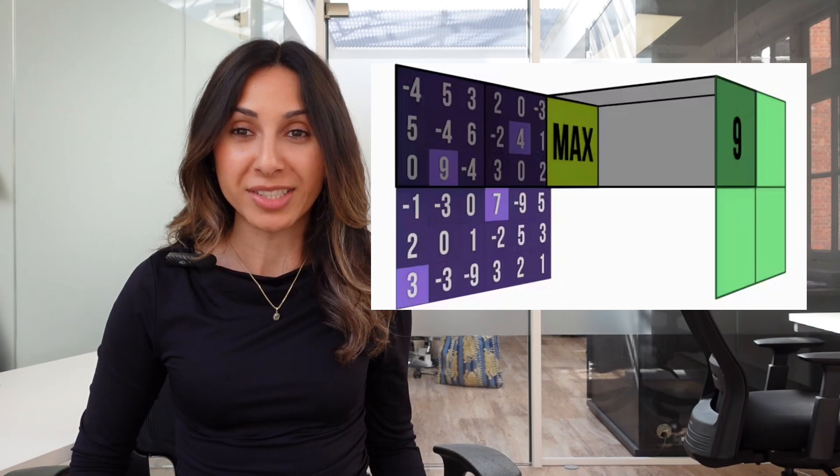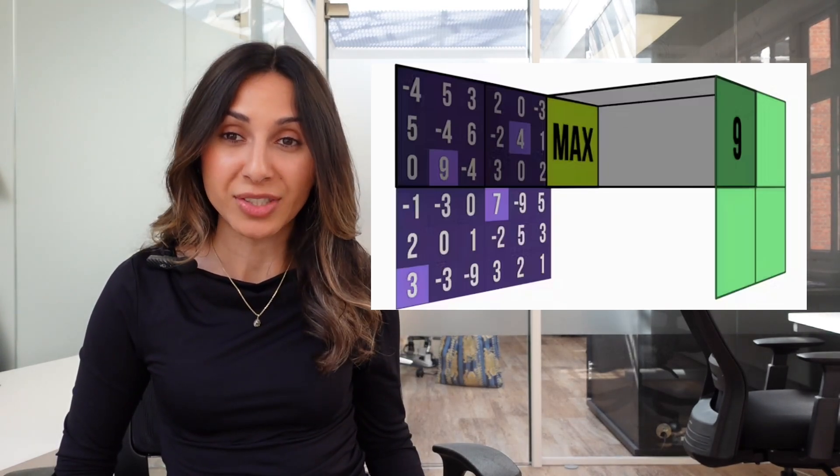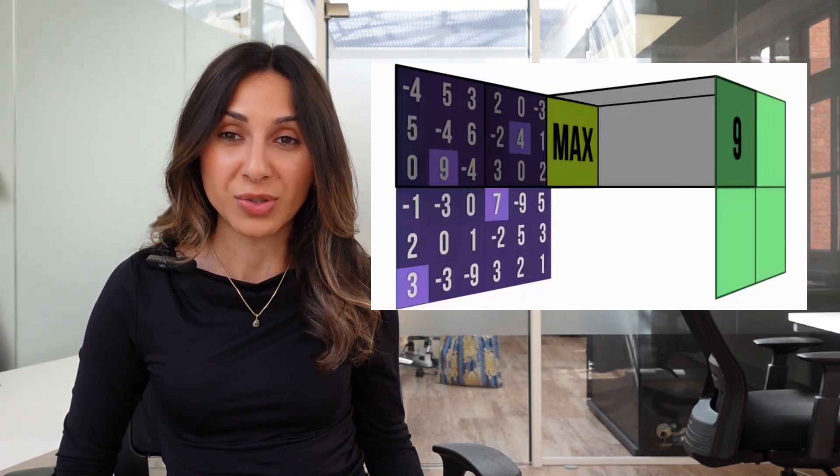It works in layers. Convolutional layers scan an image with filters to detect patterns like edges, textures, or shapes. Pooling layers compress the data, keeping important details while reducing complexity. Fully connected layers then combine all of this information to create a prediction.